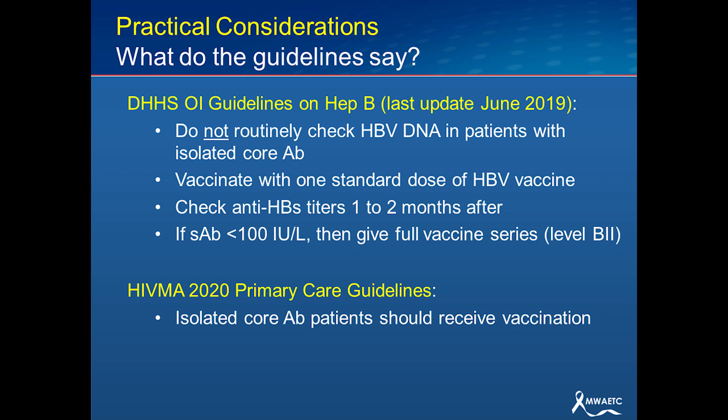The HIVMA guidelines pretty much say these folks should just receive vaccination without giving specifics. The other interesting thing the guidelines don't address is what to do when we see isolated core antibody develop from waning surface antibody — the implication being that we would not routinely be monitoring for waning surface antibody, which is a well-known phenomenon, as discussed in my December 2020 talk.